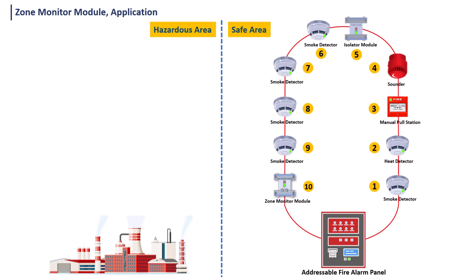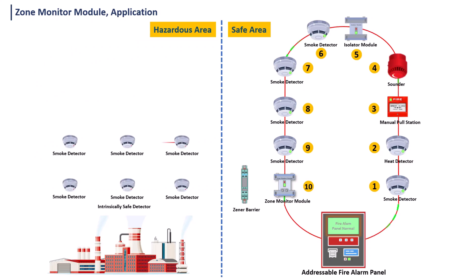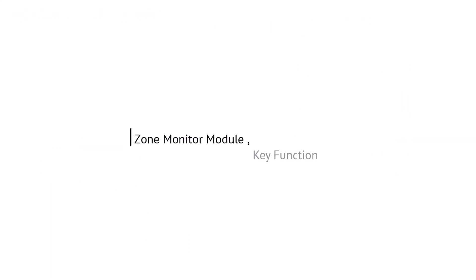Second application: in hazardous areas, IS detectors are installed. In most companies, conventional IS detectors are used. Using a zone monitor module with the addressable fire alarm, we connect it with a channel barrier to install the IS detector — that's when we use the zone monitor module. Now let's see the functions of the zone monitor module.